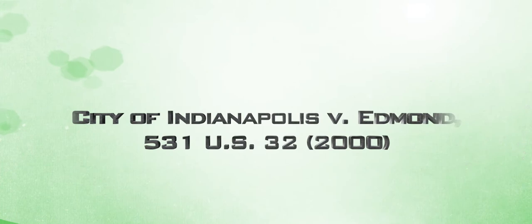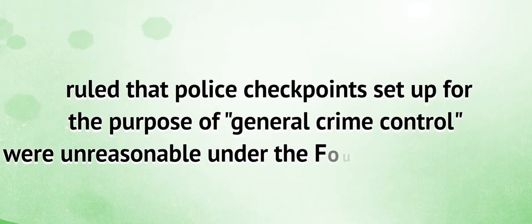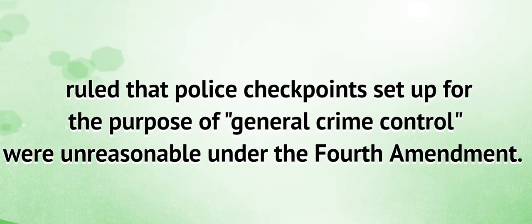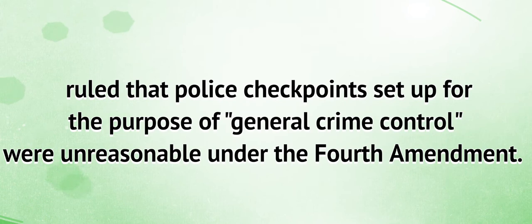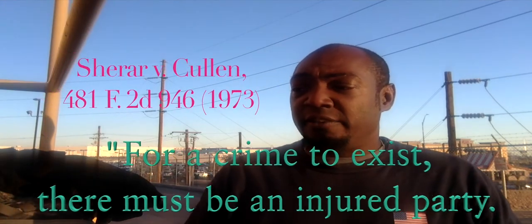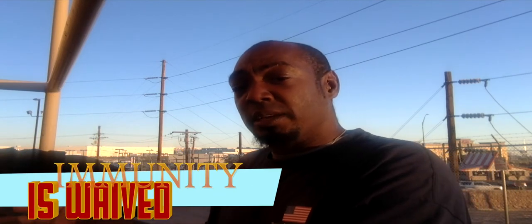The next case is City of Indianapolis v. Edmond, 531 U.S. 32, 2000. It ruled that police checkpoints set up for the purpose of general crime control were unreasonable under the Fourth Amendment. If you're just stopping people and there is no particular person of interest or damage to property — because for a crime to exist there must be an injured party — then if there is no element of a crime, it is unconstitutional. And as covered in the immunity video, they waived their immunity because they're doing something unconstitutional, and they are no longer officers of the law.